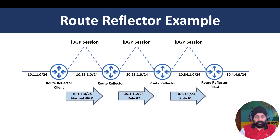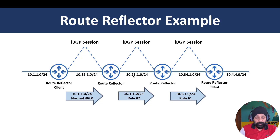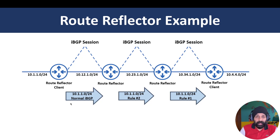Let's look at an example. We have an NLRI for 10.1.1.0/24. On the left is a route reflector with its route reflector client. On the right is another route reflector with its own RR client. The two route reflectors are not configured as route reflectors for each other — they are just an iBGP pair. When the left RR client advertises to its route reflector, it's received as a normal iBGP advertisement.